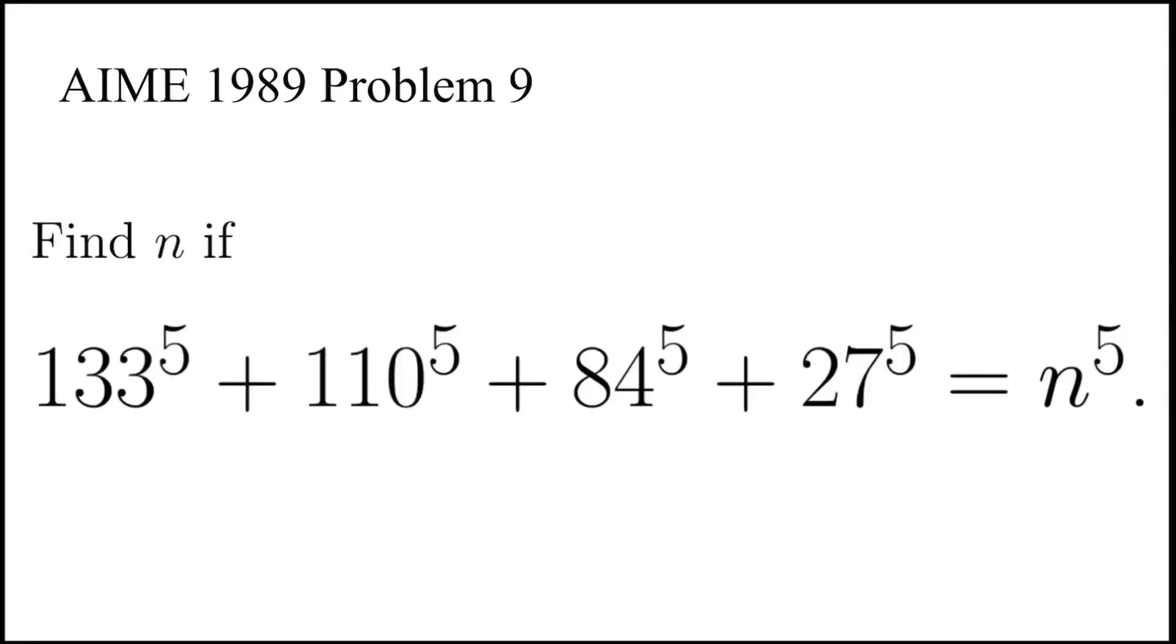In this video, we are going to find an integer n such that n^5 equals 133^5 plus 110^5 plus 84^5 plus 27^5. This is a problem from AIME 1989.